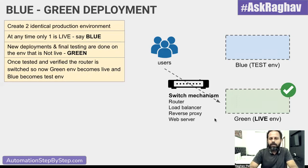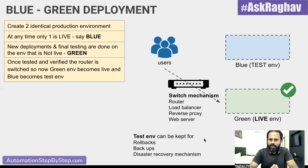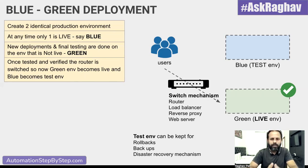To switch between environments, we use a switching mechanism like a router, a load balancer, a reverse proxy, or a web server. We can use any of these mechanisms to do the switching. The other environment can now be kept for any rollbacks, backups, or disaster recovery. Even though we tested before switching, if anything happens after switching, we can use the other environment which is not being used.